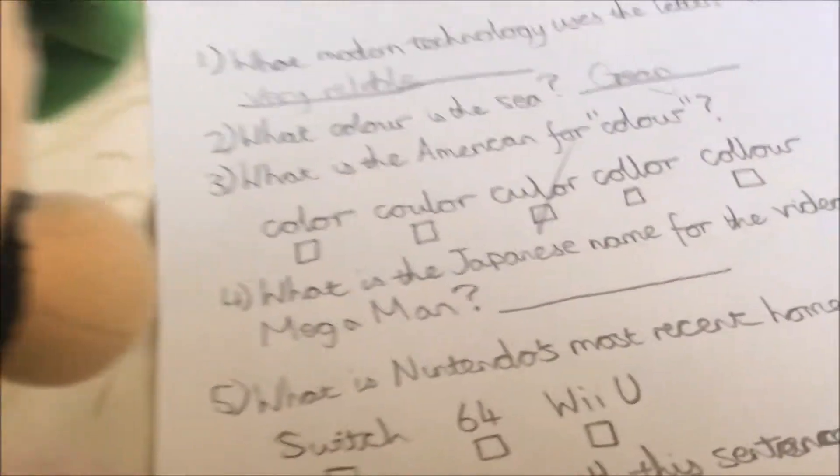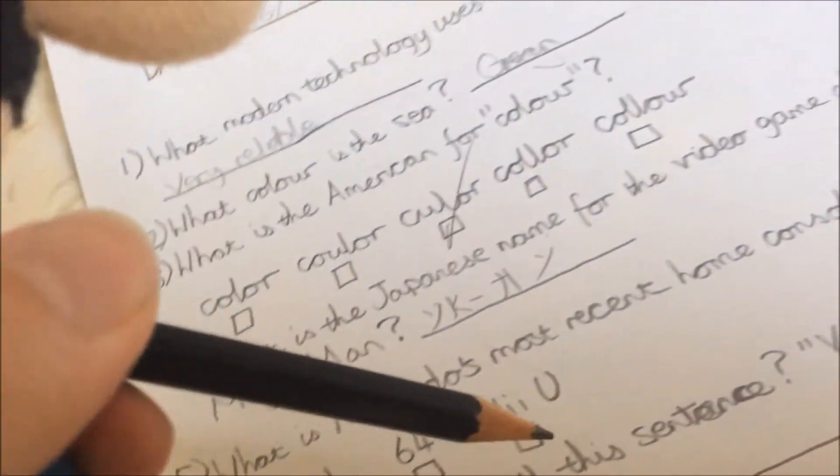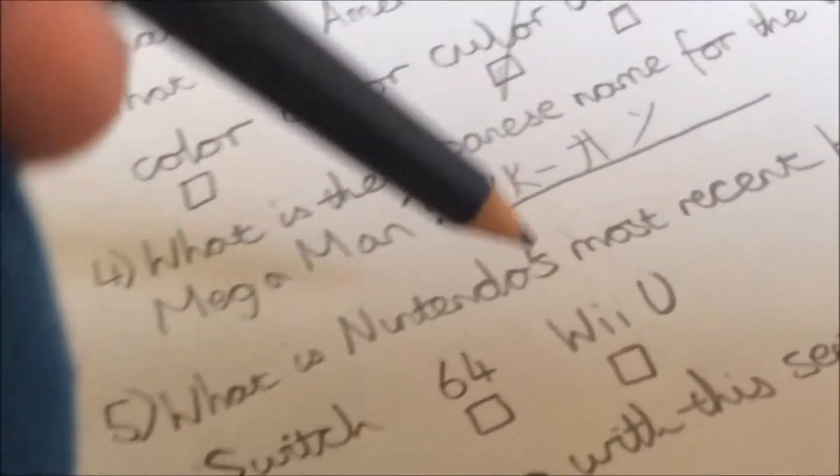What is the Japanese name for the video game character Mega Man? Ah, this one's going to stump me. Let's put random Japanese symbols in. There we go. What is Nintendo's most recent home console? So it switches into console, so it's Wii U.